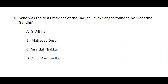Question number sixteen: Who was the first president of the Harijan Sevak Sangha founded by Mahatma Gandhi? Option A: G.D. Birla, option B: Mahadev Desai, option C: Amritlal Thakkar, option D: Dr. B.R. Ambedkar. The correct answer is option A — G.D. Birla.